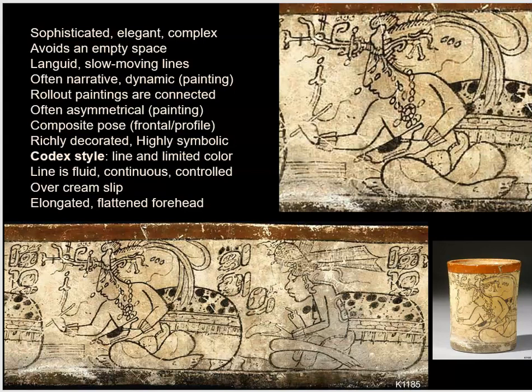These are lines laid down by the artist — continuous, languid lines — to create images that are often narrative, relating some activity or perhaps a story. There is a dynamic quality to the paintings in that figures are often shown moving. In this case, our maize god, acting as a scribe and artist, is leaning over — slightly asymmetrical, slightly off balance, with a sense of motion.